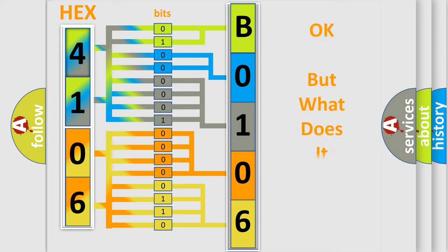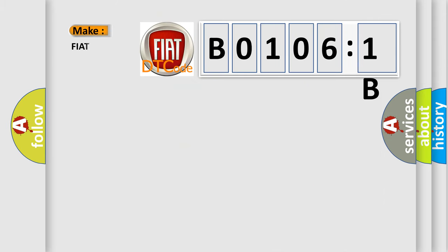We now know in what way the diagnostic tool translates the received information into a more comprehensible format. The number itself does not make sense to us if we cannot assign information about what it actually expresses. So, what does the diagnostic trouble code B01061B interpret specifically for Fiat car manufacturers?